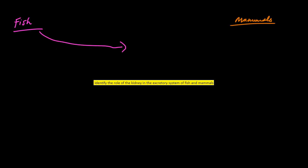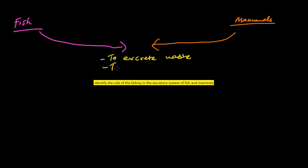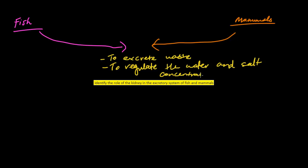Both of these are linked together — they both pretty much aim to do the same thing, where their main aim is to excrete waste and to regulate the water and salt concentrations in the body. So our connection is that both fish and mammals have a kidney used as part of the excretory system, with those two main functions.